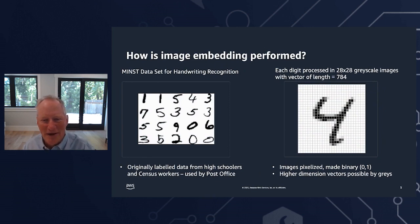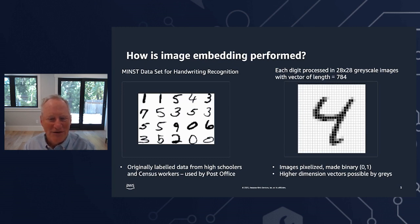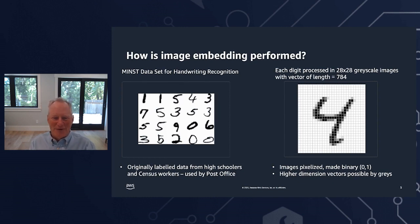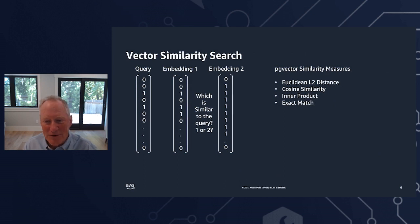What about images? To give you an idea of how images are vectorized, here's an example of handwriting. This dataset is called MNIST and it contains 70,000 handwritten digits written by high schoolers and census workers — originally used by the post office for address recognition. Each written number is processed into a 28 by 28 grayscale image. 28 by 28 gives us a vector length of 784. The images are then pixelized into binary, so there's either a one or a zero in each vector location. Now let's look at how PG Vector would determine similarity between these vectors.